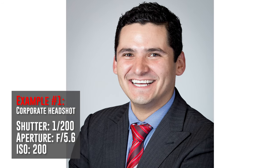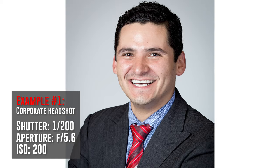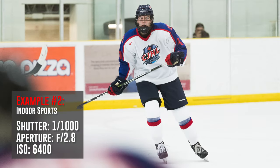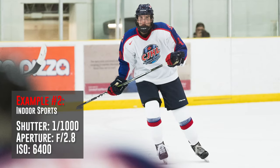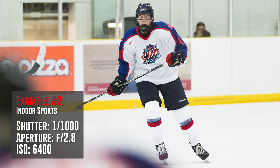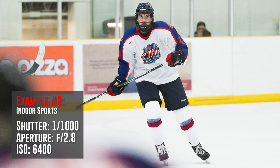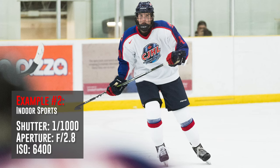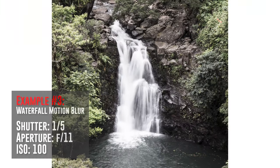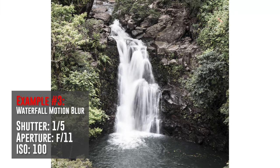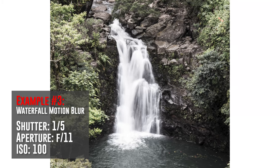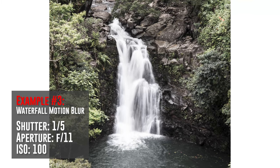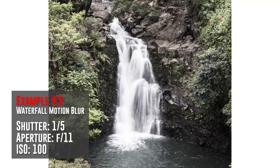Here are a few examples of how you can use these settings creatively. When shooting corporate headshots, you want the facial features of your subject sharp and in focus: a 1/200th shutter speed, an aperture of f5.6, and ISO 200 would work well. When shooting indoor sports and you need to freeze action in a low-light environment: a 1/1000th shutter speed, an aperture of f2.8, and ISO 6400 would work well. When trying to create motion blur and you need a longer exposure time: a 1/5th shutter speed, an aperture of f11, and ISO 100 would work well.